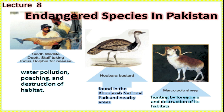In Pakistan, there are some species that are endangered. Because of human activities, there is a lot of loss. For example, there is a dolphin in Pakistan. Its population is very low — only around 600 individuals remaining. There are some major reasons such as water pollution, poaching, and habitat destruction.